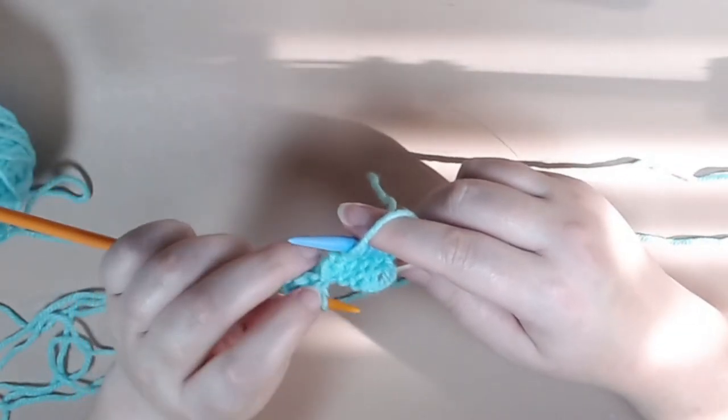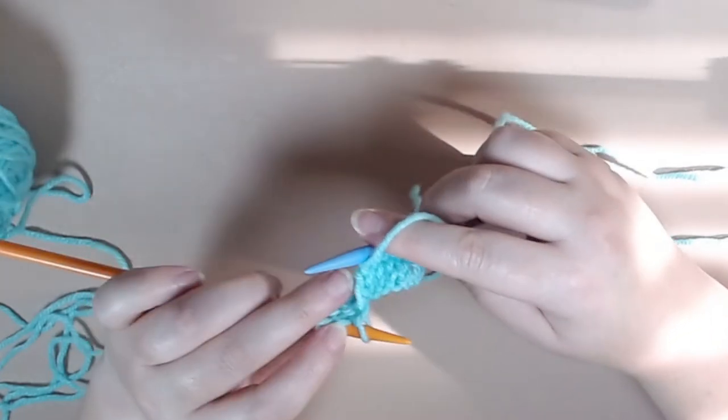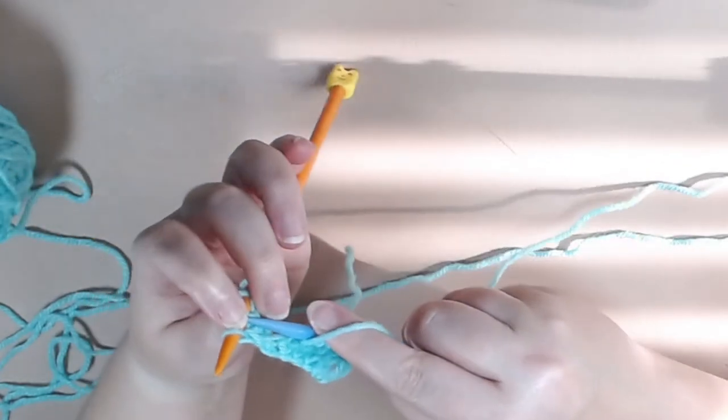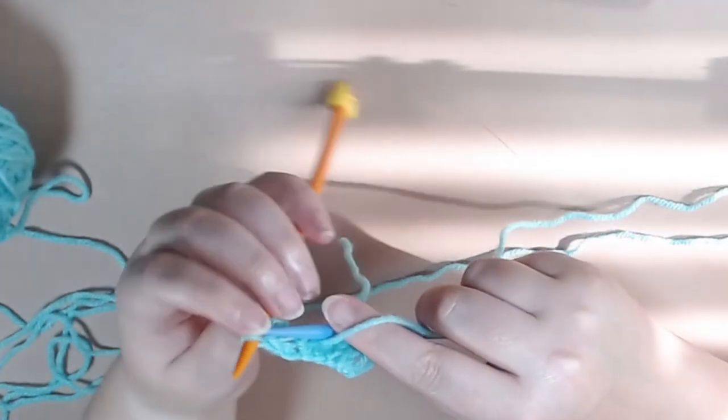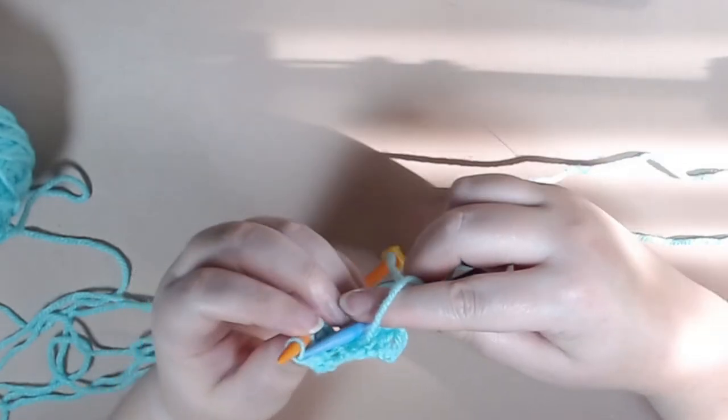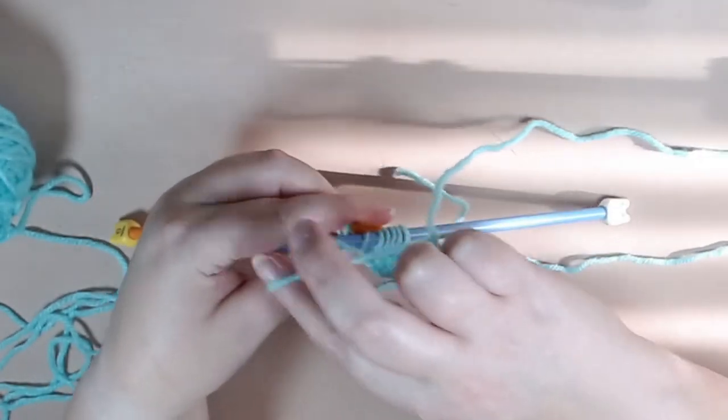So what you're going to do is go in the back loop, going from the back of that loop forward and then twisting it and then you purl.